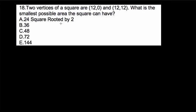Okay, so we have two vertices of a square that are (12,0) and (12,12). What is the smallest possible area that the square can have?